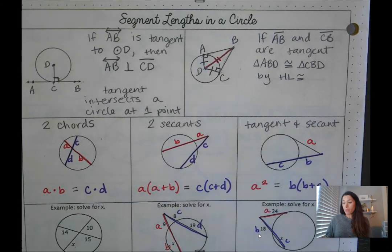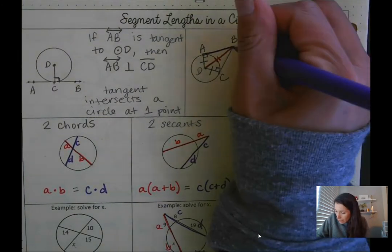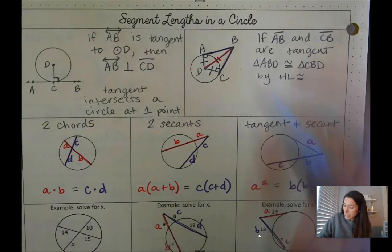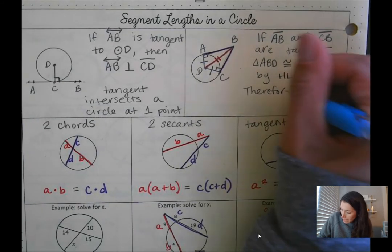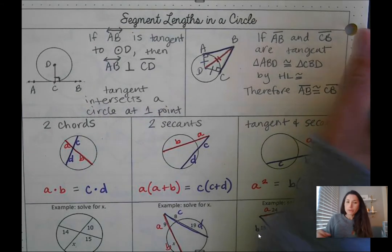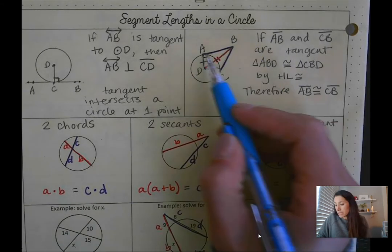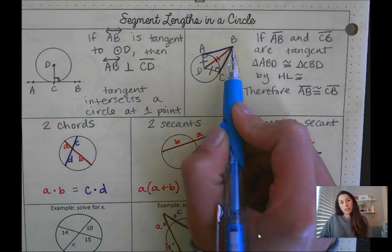Really what we were looking to figure out was that these segments here, AB and this segment here CB are congruent. So we can say therefore AB is congruent to CB. Remember that's congruent. Triangles have congruent parts, the CPCTC. And so basically any two segments that are tangent to a circle and they meet at the same point, they're going to be equal to each other.